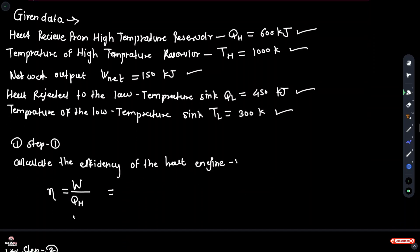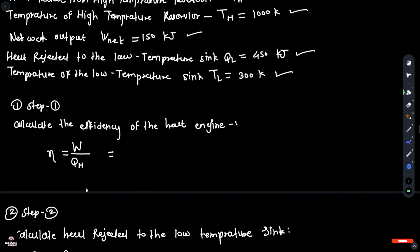First, calculate the efficiency of the heat engine. Efficiency is equal to network divided by QH, so network done is 150 kJ divided by heat received from the high temperature reservoir 600 kJ, which is equal to efficiency 0.25.